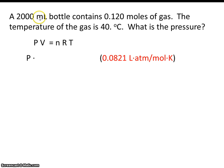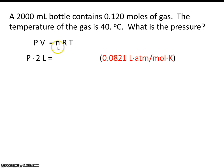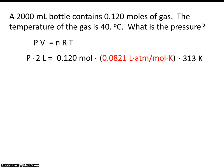So a 2,000 milliliter bottle — the volume, that's V, is given to us in milliliters, so we have to convert that to liters. So that would be 2 liters. Moles — that's already in moles, that's fine. And then temperature, that's given to us in degrees C, it has to be in Kelvin, so make sure you do 40 plus 273.